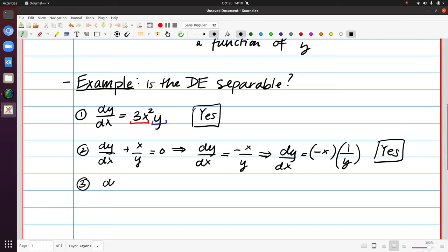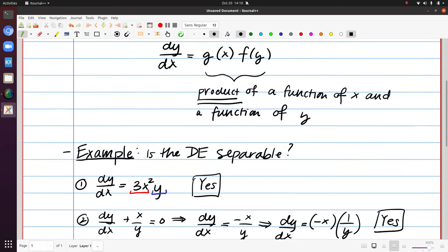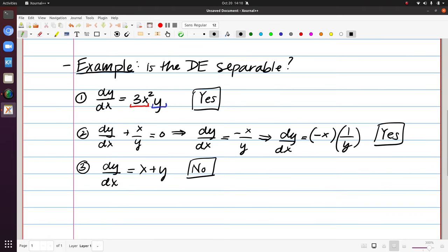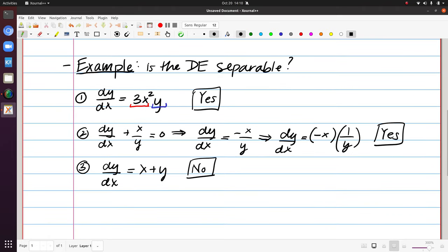So what if we instead had dy/dx equals x plus y? So of course it can be tempting to think that the x and the y are separated but they're separated by addition and not multiplication. So this is actually not separable. There's no way that you could come up with a suitable g(x) and f(y) so that you could express that right hand side as g(x) times f(y).